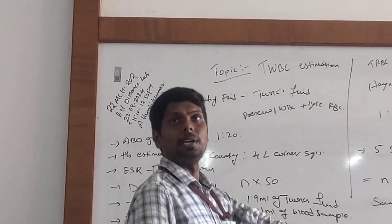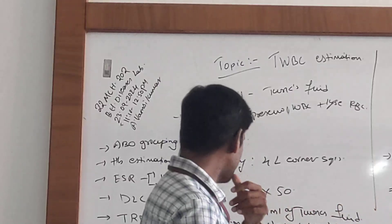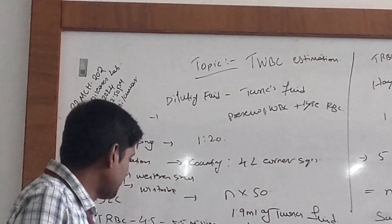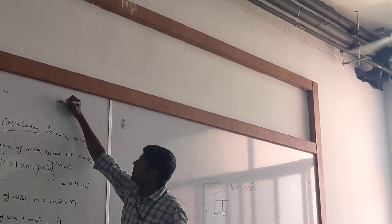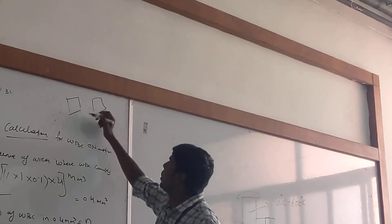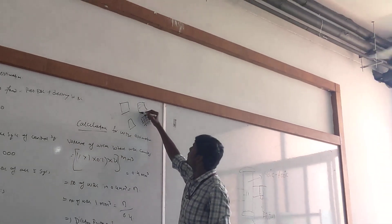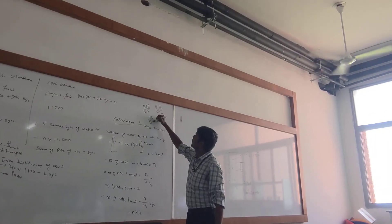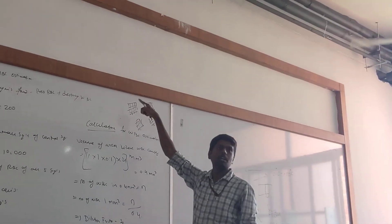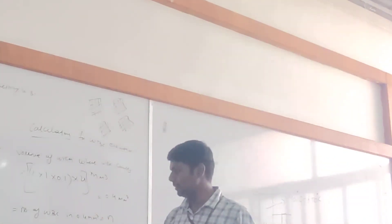Any more doubts in WBC estimation? You will draw 4×4 squares on paper, start counting, and write the number in each square. Sum of all counts × 50 will be your answer.